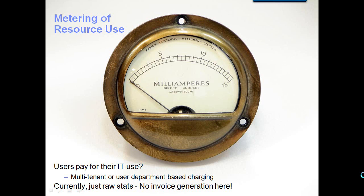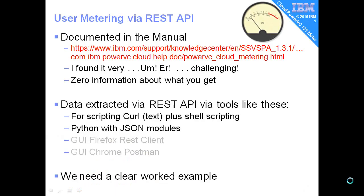In the current release of PowerVC 131, there's no way of generating invoices from this data. We just get the raw data. That may change in the future. We were warned in the announcement that the metering information would be via the REST API, and it is documented there, but it's very thin on the ground. Unless you're an absolute guru at REST APIs, the OpenStack and Ceilometer formats and how they operate, you are going to get stuck just as I was. Very little information about the actual information you get back in the actual manual page.